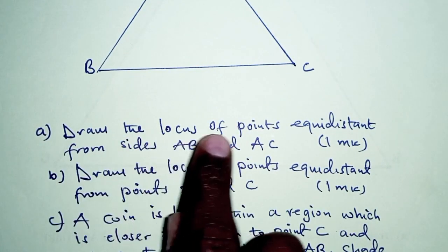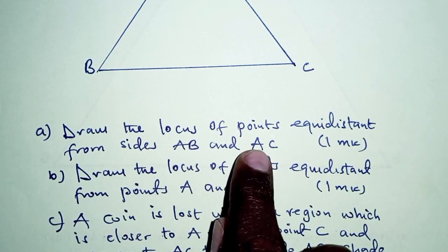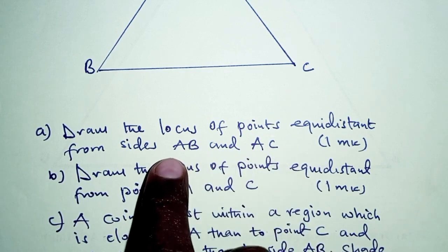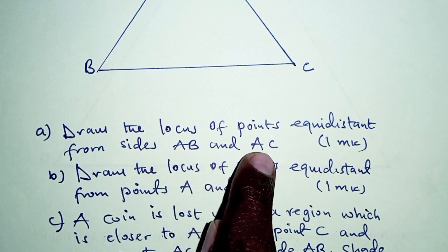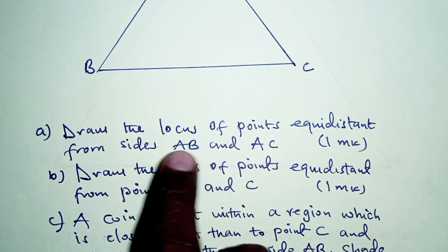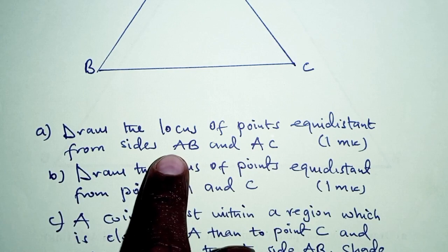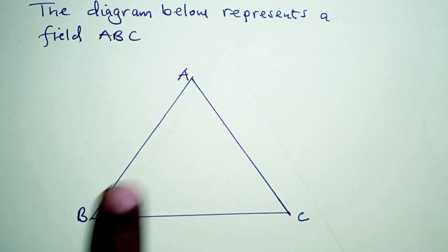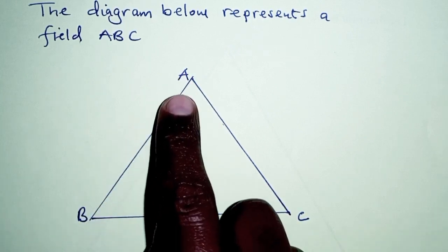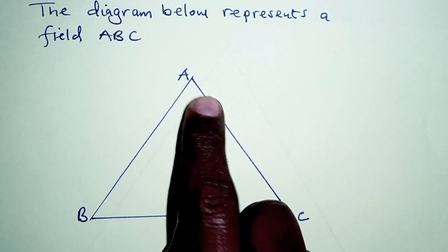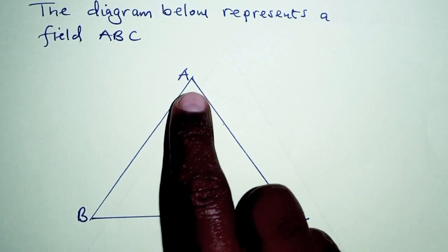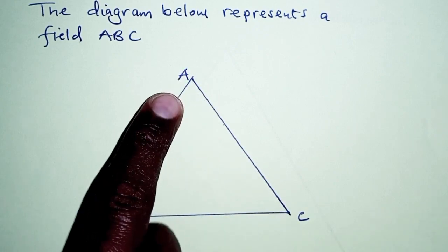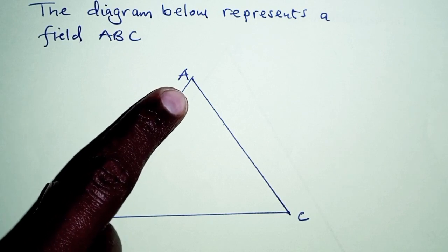Part A: draw the locus of points equidistant from sides AB and AC. When you're given AB and AC, these are lines which intersect at the common point A. So if they intersect at the common point A, then they form an angle at that point A. As you can see in the diagram, we have AB and AC intersecting at A and therefore forming an angle at that point. So the locus of points equidistant from AB and AC should be the angle bisector, and we are going to bisect the angle at A.